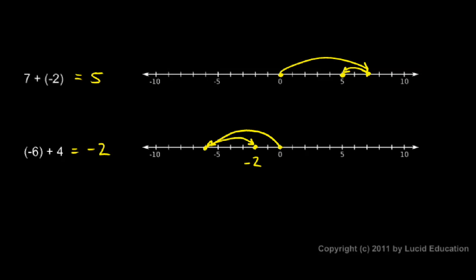When adding numbers with opposite signs, the sign of the answer is always going to be the same as the sign of the number with the largest absolute value. So here you look at the 7 and the negative 2, but just think about those two numbers as if there were no negative signs — 7 and 2 — and say, okay, 7 is bigger and the 7 here is positive, so my answer is positive.